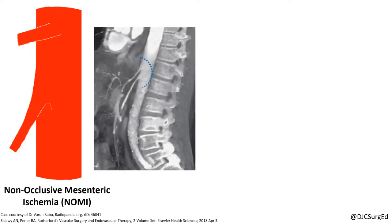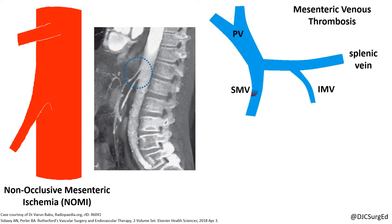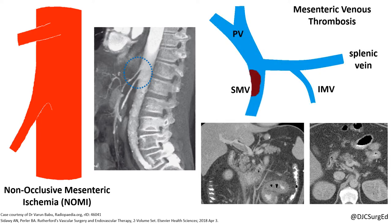Non-occlusive mesenteric ischemia is due to mesenteric vasospasm resulting in a low flow state from any kind of shock or use of vasoconstrictors, and is often seen in patients with severe cardiac failure. Finally, mesenteric venous thrombosis, most commonly of the SMV, can lead to decreased venous outflow, edema, and decreased perfusion of the small intestine.